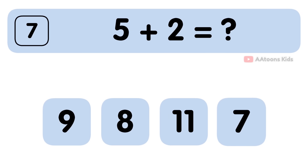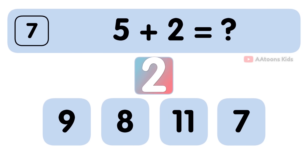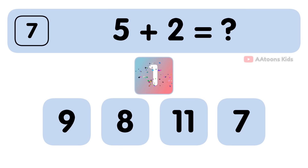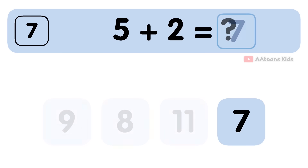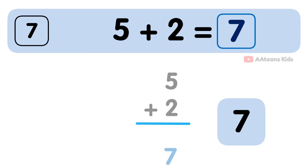5 plus 2 is equal to 7. So the answer to 5 plus 2 is 7.